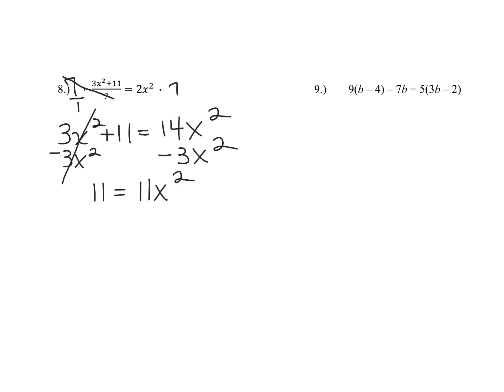Then get that x squared alone, so you're going to divide both sides by 11, leaving you with x squared equals one. Now we don't want x squared, we want x. So we undo x squared by finding the square root of both sides, and you get plus or minus one equals x because the square root of one is one. And remember there's two answers because negative one times negative one is also one.